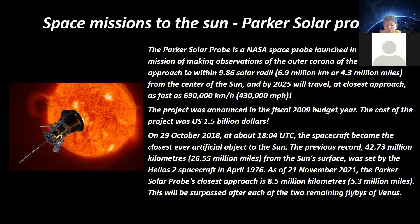The previous record, 42.73 million kilometers, which is also equal to 26.55 million miles from the sun's surface, was set by Helios 2 in April 1976. As of 21st November 2021, the Parker Solar Probe's closest approach is 8.5 million kilometers, which is also equal to 5.3 million miles. This was surpassed after each of the two remaining flybys to Venus.